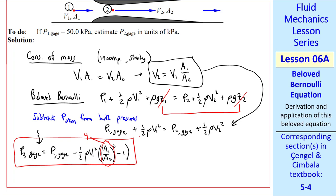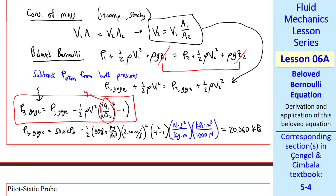And this is our answer in variable form. I plug in the values with some unity conversion factors. And I get 20.060 kPa. I give my final answer to three significant digits, 20.1 kPa.